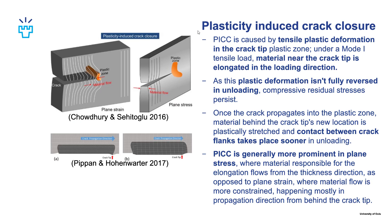Plasticity induced crack closure is caused by tensile plastic deformation in the crack tip plastic zone. Under a mode 1 tensile load, material near the crack tip is elongated in the loading direction. Because this plastic deformation isn't fully reversed in unloading, it leads to residual displacements and compressive residual stresses. Once the crack propagates into its plastic zone, material behind the crack tip's new location is plastically stretched and contact between crack flanks will take place sooner in unloading. PICC is usually more prominent in plane stress, where the material responsible for elongation flows from the thickness direction and the specimen gets thinner, as opposed to plane strain where out-of-plane flow is constrained and material has to flow from behind the crack tip in the crack propagation direction.